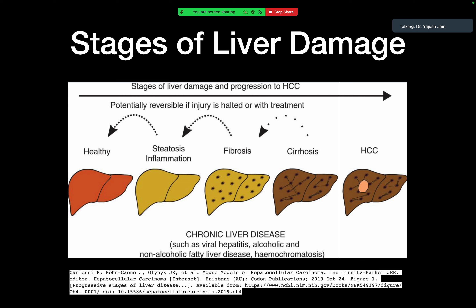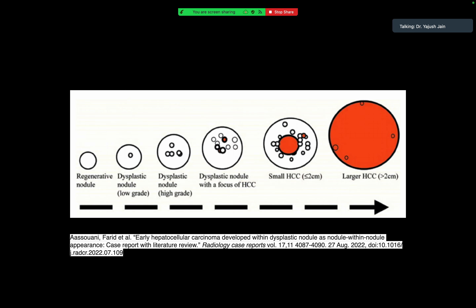All these changes are reversible, but as the stage of disease progresses, reversibility becomes less and less favorable. At the fibrotic stage we have regenerative nodules, which transform into low-grade dysplastic nodules with repeated injury. These low-grade dysplastic nodules then transform into high-grade, finally forming a small focus of HCC, which then develops into a small or large HCC — the criteria for which is 2 cm.